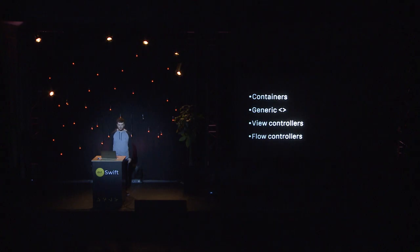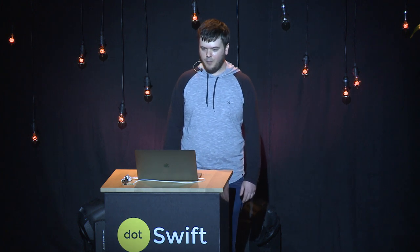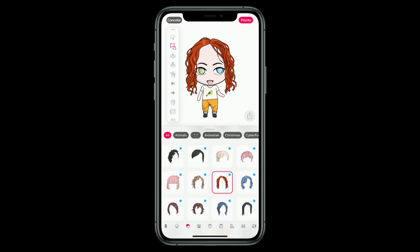So let's talk about this sugar. Not every view controller is created equal. I like to separate what Apple calls a view controller into four categories: containers, generic controllers, view controllers, and flow controllers. I'll give you an example of each type, and I'm also going to provide a Swift playground with an implementation so you can check it out.